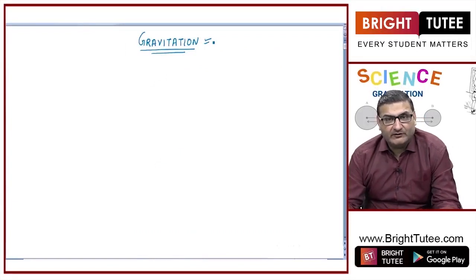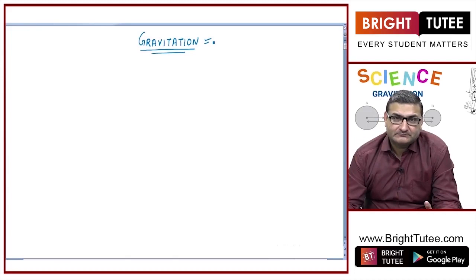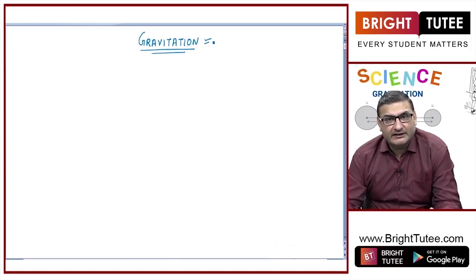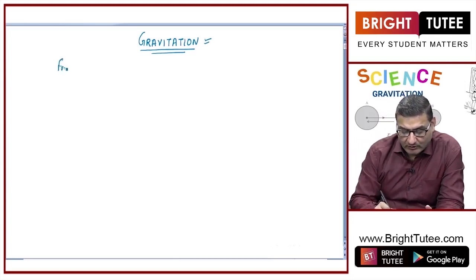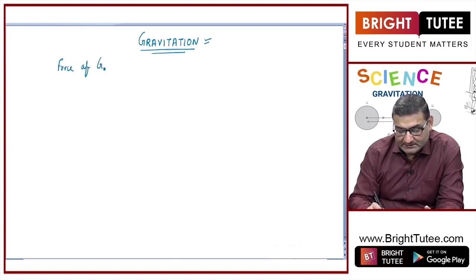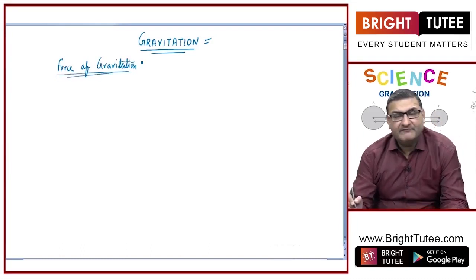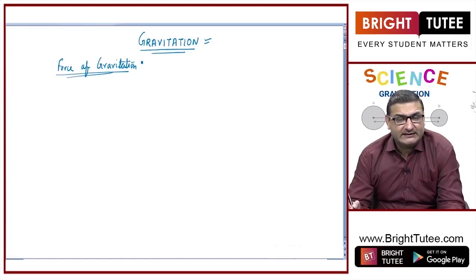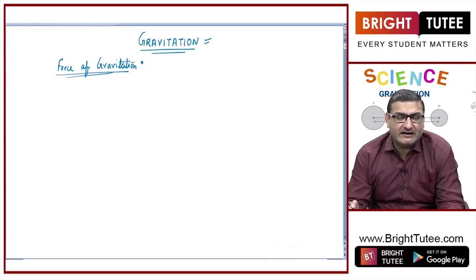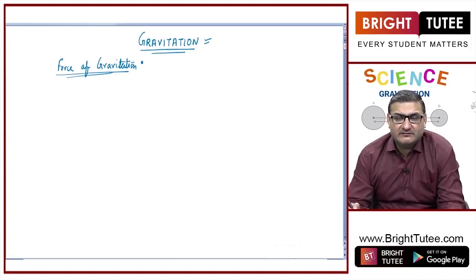Isaac Newton — we are already familiar with Newton's name. Isaac Newton gave this fundamental concept of a force which pulls everything towards it. That force he called the force of gravitation. This is the force of gravitation because of which everything falls on the ground — it is attracted towards the force of gravity of the earth. Similarly, it is the force of gravity of the earth which makes the moon revolve around it, and it is the force of gravity of the sun because of which the various planets revolve around it.